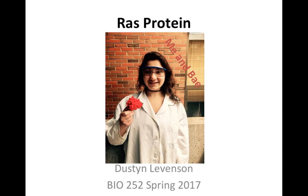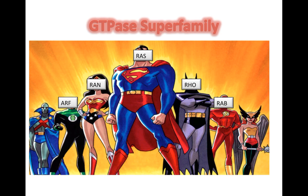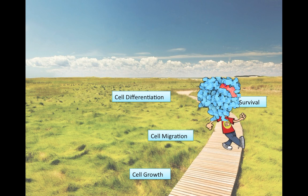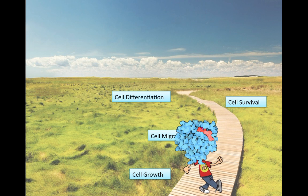RAS proteins, found in all animal cell lineages and organs, are members of the superfamily GTPases. The RAS subfamily has several different functions, but all commonly relate to controlling signal transduction pathways correlated to cell growth, migration, survival, and differentiation.